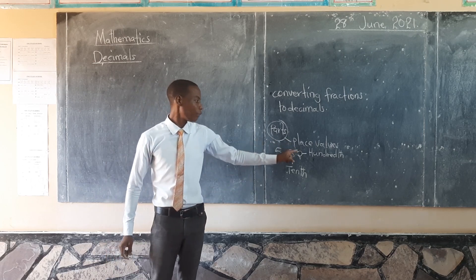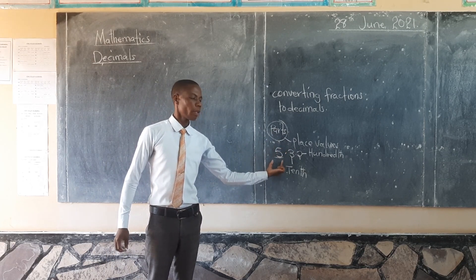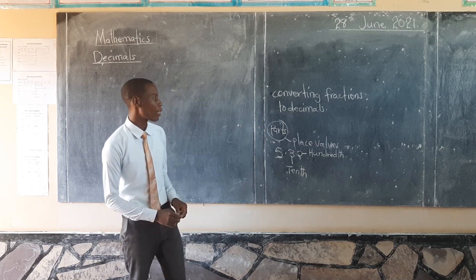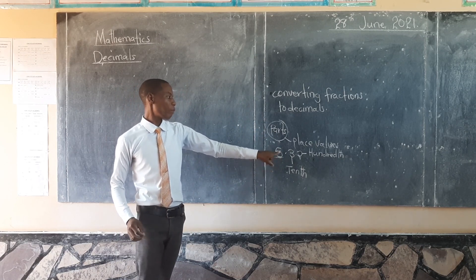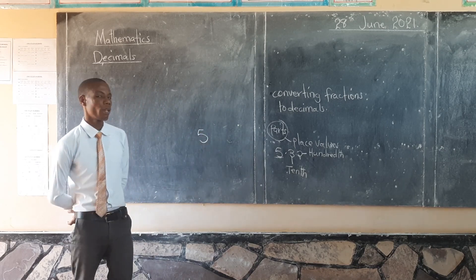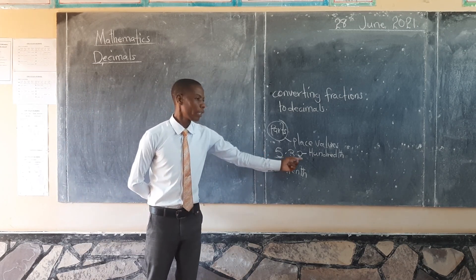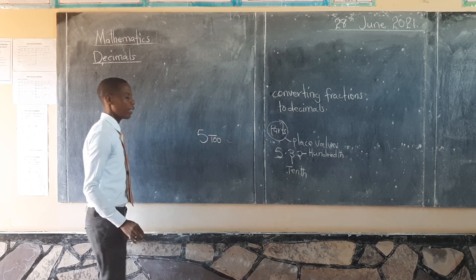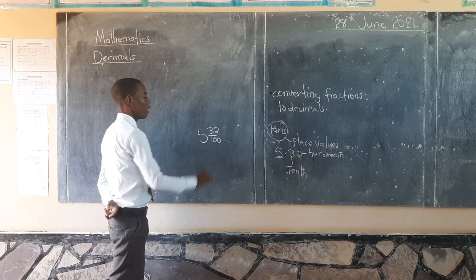Now, when it comes to converting these decimals to fractions, when you see a number starting with a whole number, it means the fraction is supposed to be a mixed fraction. So in this case, 5.32 is supposed to have 5 as a whole number. Since there are two digits after the decimal point, it is going to have 100 as a denominator, and 32 itself is supposed to be the numerator.